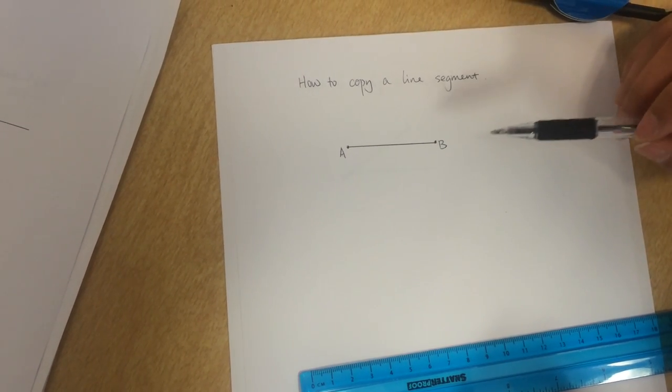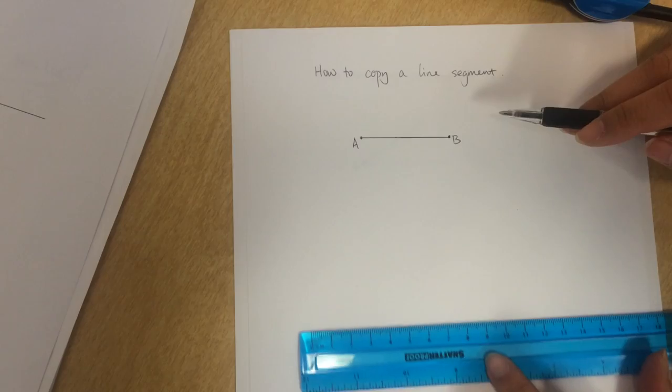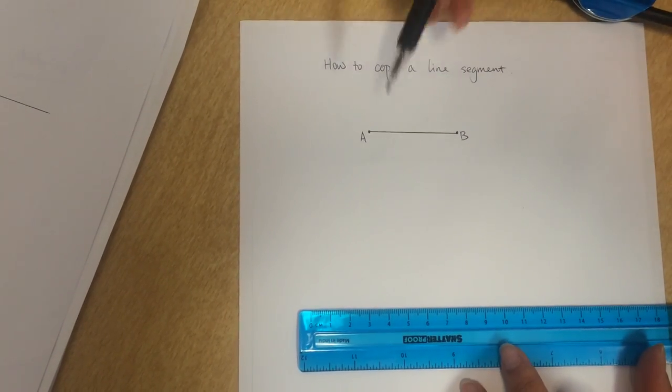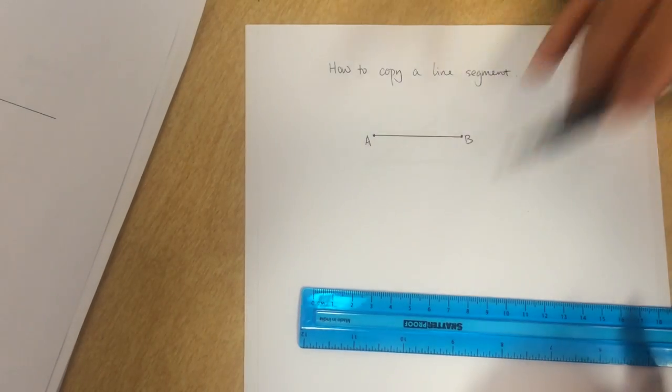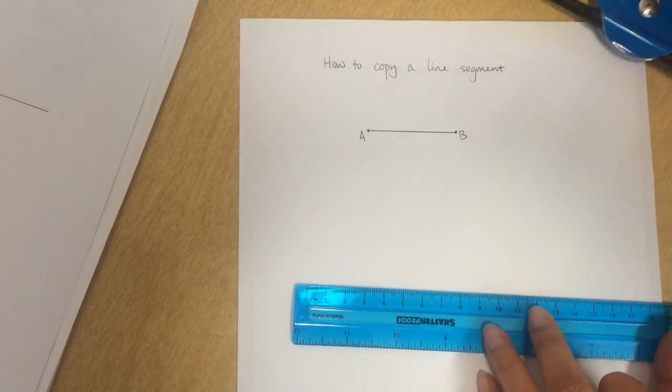Okay, so I'm going to show you how to copy a line segment. Here we are going to copy line segment AB by using only a straightedge and compass.